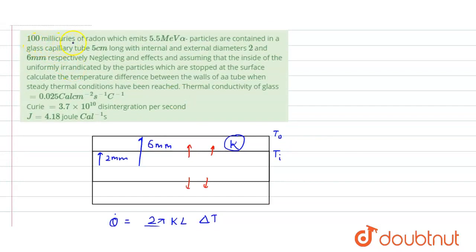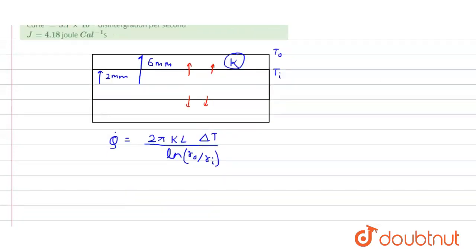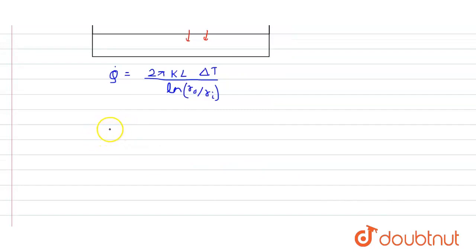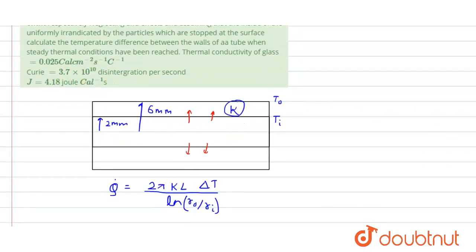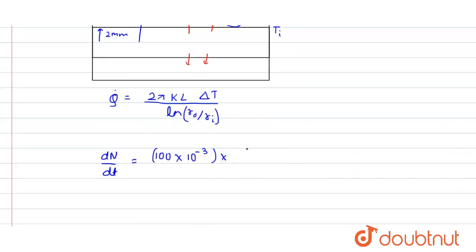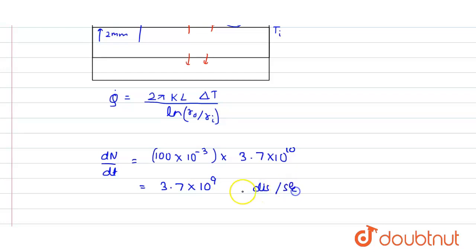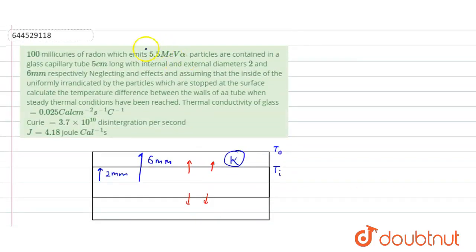We are given 100 millicurie of radon, so the rate of decay dn/dt equals 100 × 10⁻³ curie. Since 1 curie equals 3.7 × 10¹⁰ disintegrations per second, multiplying gives us 3.7 × 10⁹ disintegrations per second.